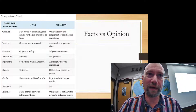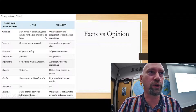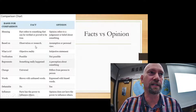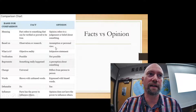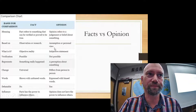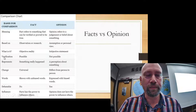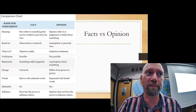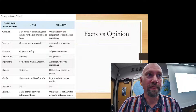Now, more about facts versus opinion from this chart. A fact refers to something that can be verified or proved to be true. Opinion refers to a judgment or belief about something. Facts are based on observation, research, or scientific research methodology. Opinions are based on assumption or personal view. An important word here is 'verification' — you can ask yourself: is this fact possible to check? Can I verify it? If you can look at other sources to confirm it's factual or true, then it's possible to verify.